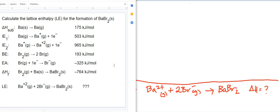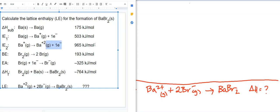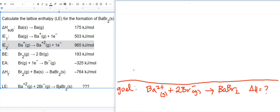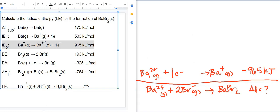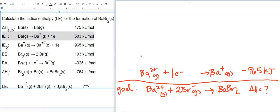I start by scanning all the reactions that are given, looking for Ba2+ gas, because that's the first thing given in the goal reaction. I'm going to flip that IE2 reaction, the second ionization energy for barium, where the Ba+ ion gives up one electron to become a Ba2+ ion. The delta H is positive for ionization energy, but since I flip that reaction so that Ba2+ is on the reactant side, I have to change the sign from positive to negative.